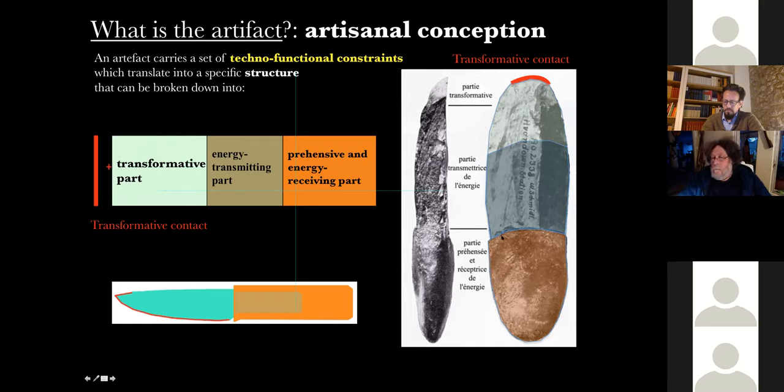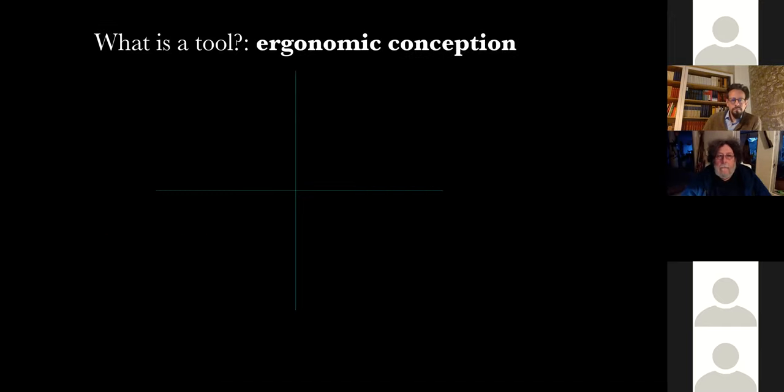If we compare with the knife, the colors are the same. So it's very simple to understand this shell. Here we have a historical instrument—an Aboriginal knife that comes from Australia. We have the prehensive part, the transmitting part, and the transformative part. And here we have just the cutting edge, the transformative contact. It's very important. Often we forget this part, the transformative contact. It's very difficult to observe this part on the archaeological artifact.